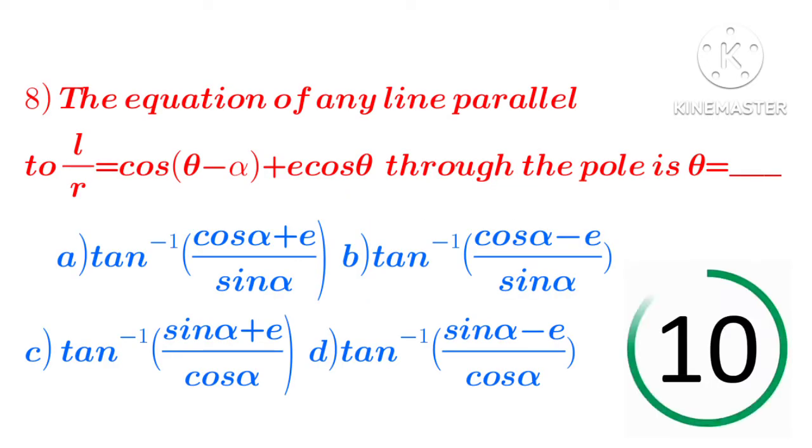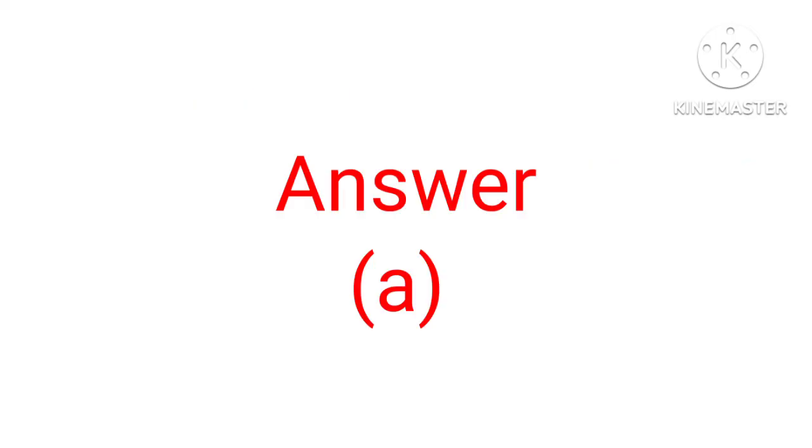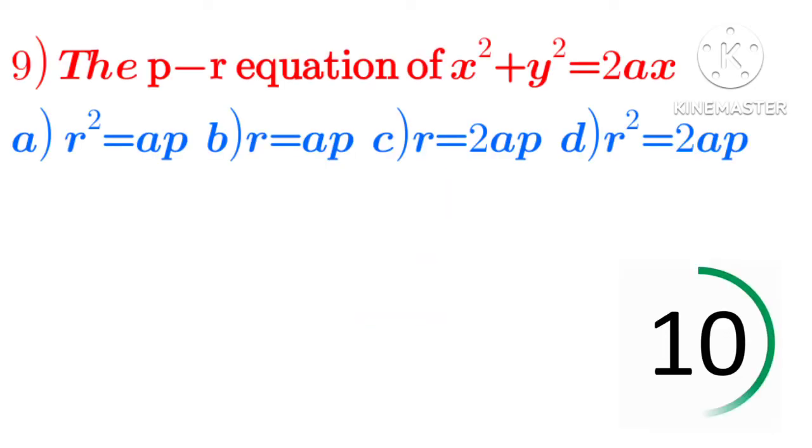The equation of any line parallel to l divided by r equal to cos of theta minus alpha plus e into cos theta through the pole. Options a, b, c, d. The answer is option a.